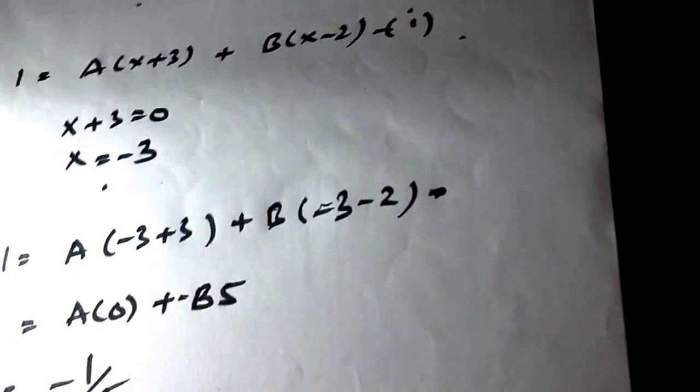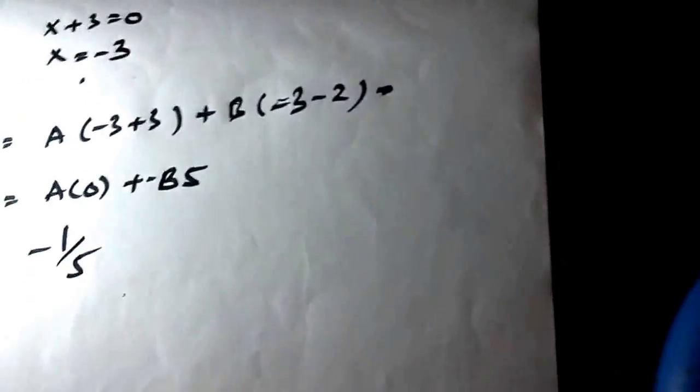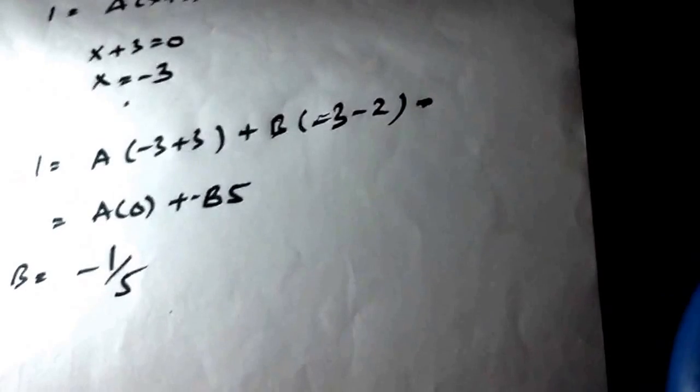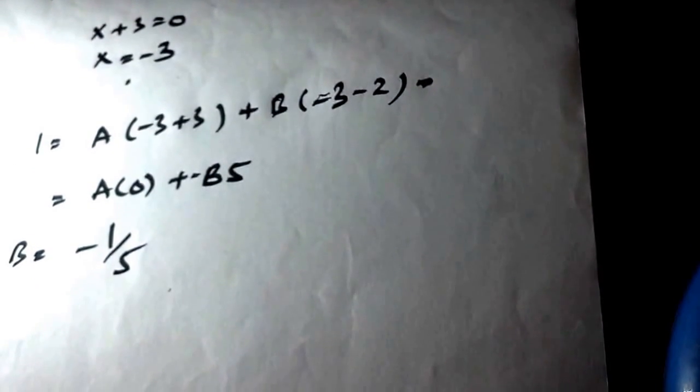So by partial fraction method we will first find b then a and then put it in the original equation.